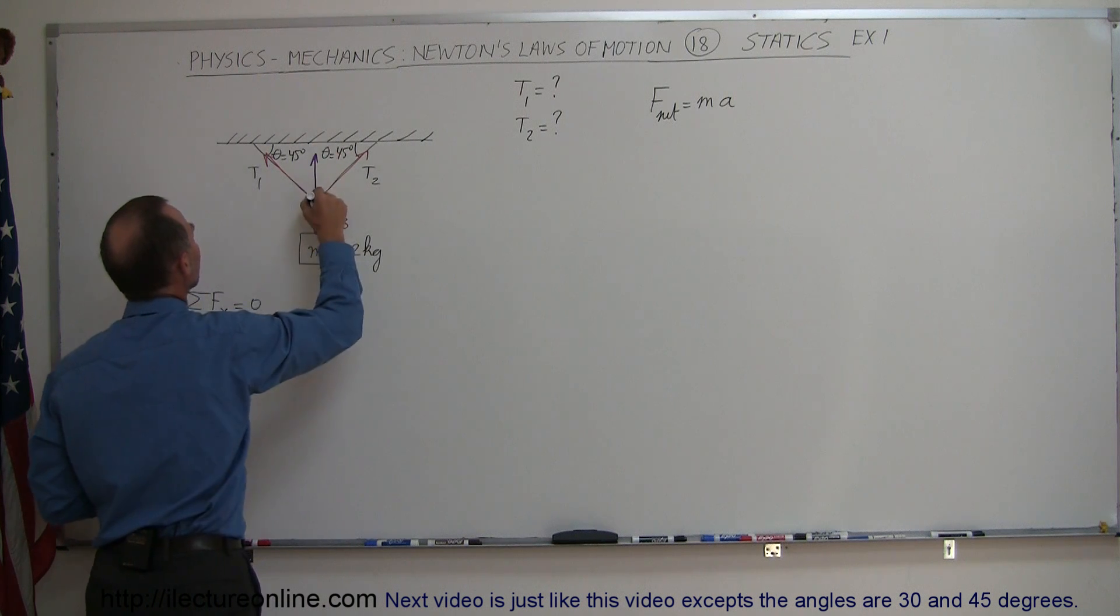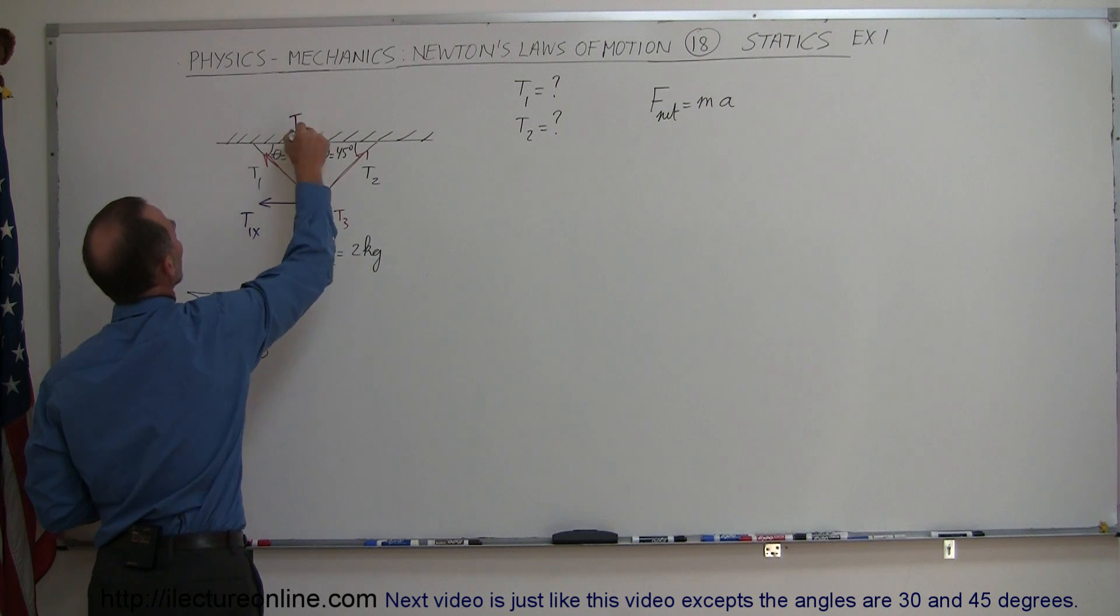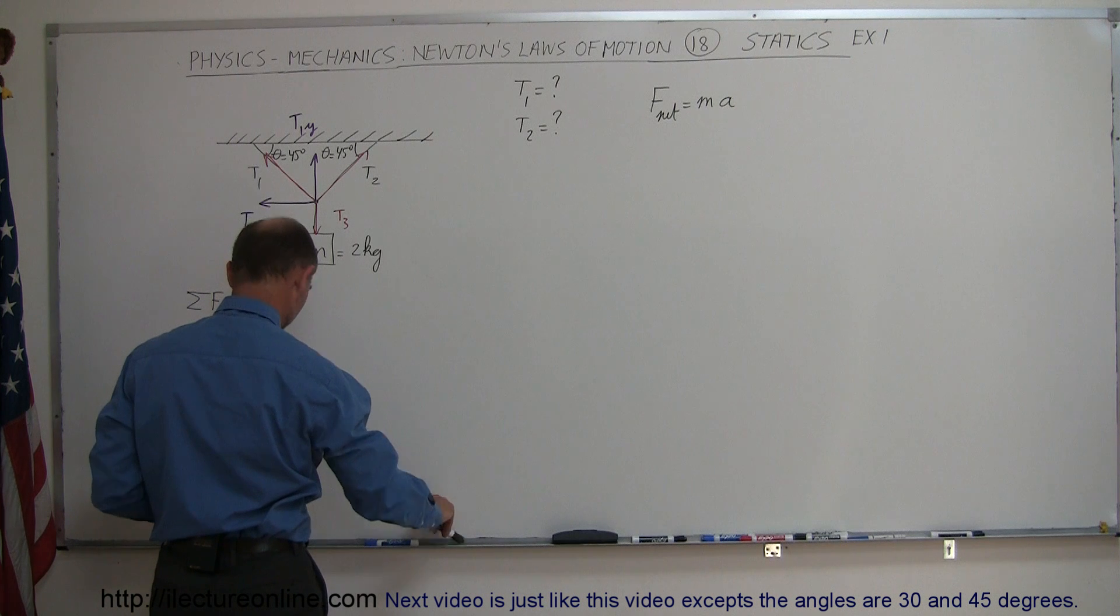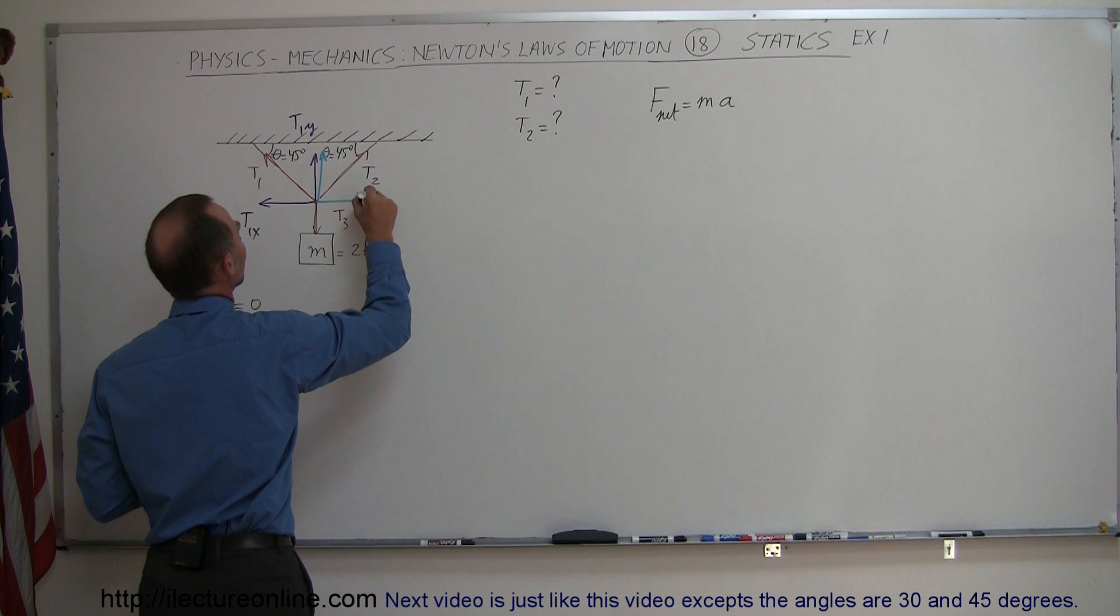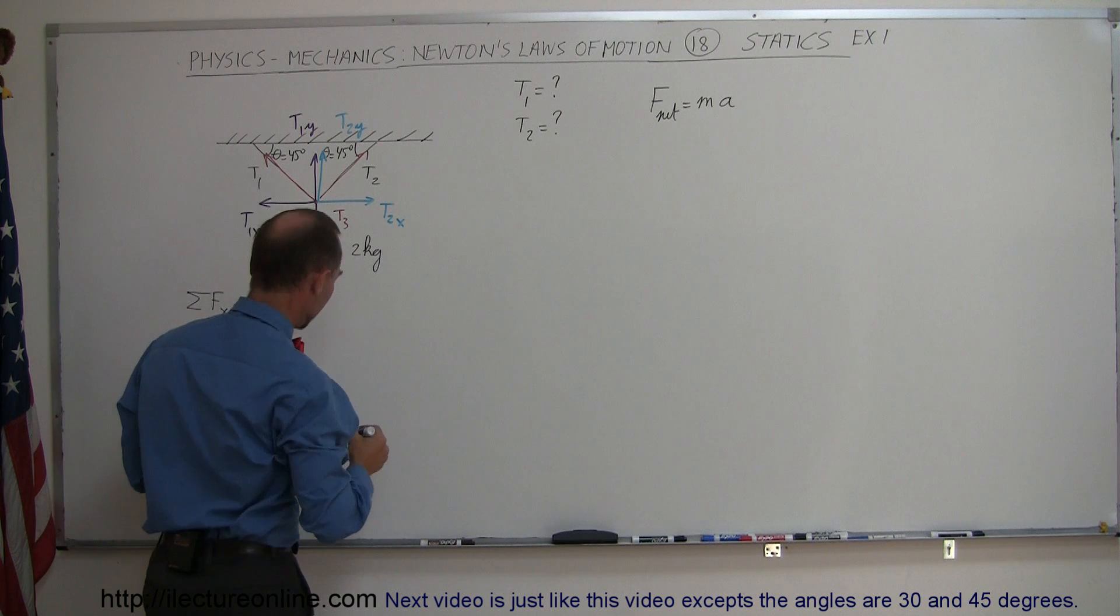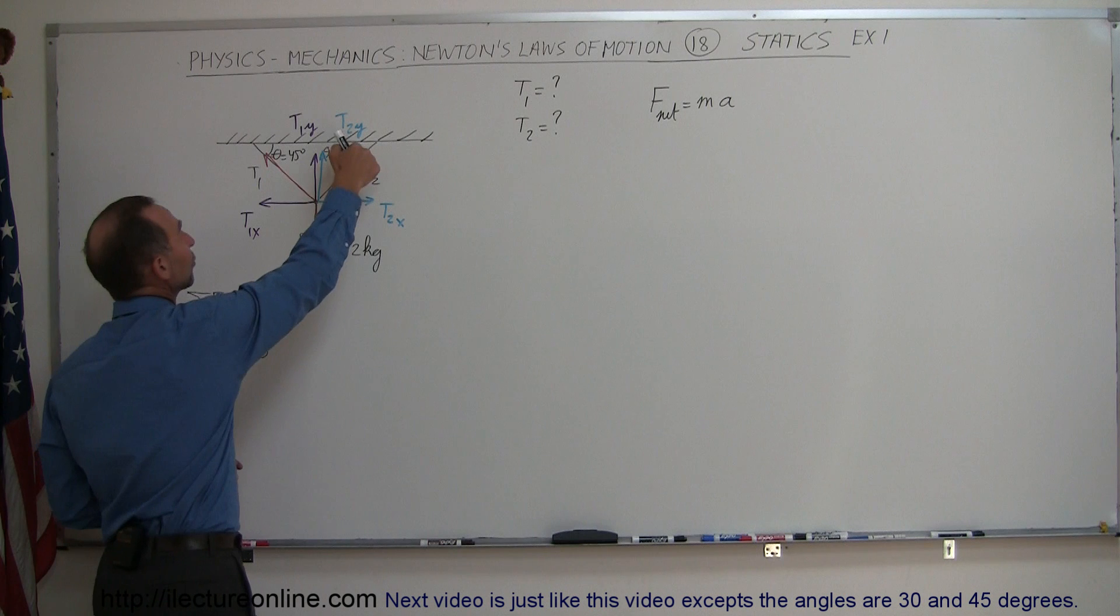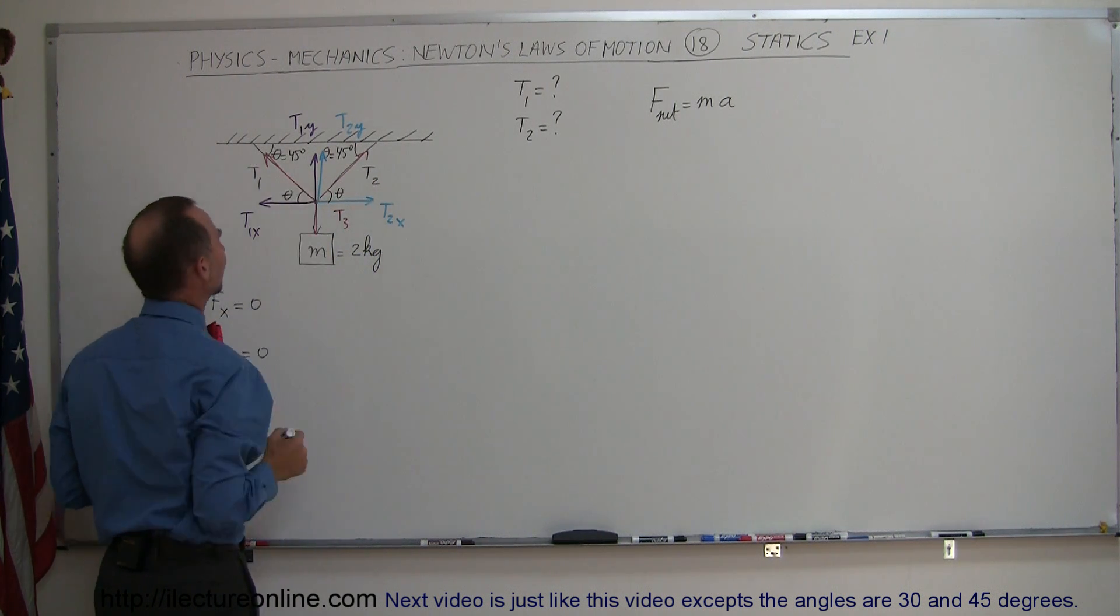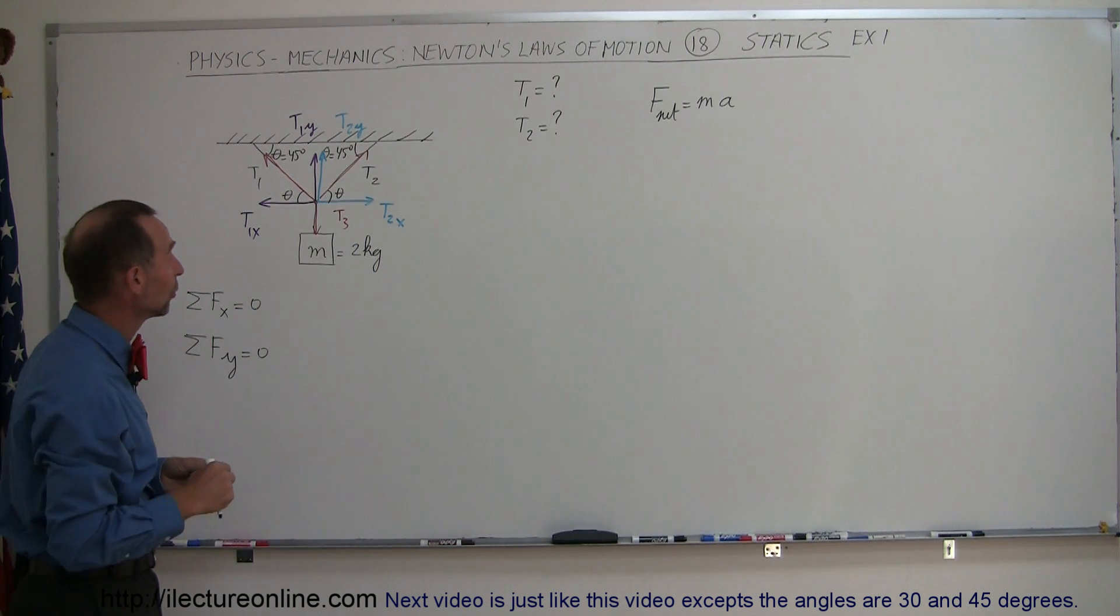So here we can draw the x and y component for tension one. This is tension one x, and this is tension one y. And then using a different color, maybe I'll use blue, I can draw the x and y components of tension two. This is tension two x, and this is tension two y. And of course, I can then find out what those are, and since this angle is 45 degrees, that means that this angle must be 45 degrees as well, and this angle must be 45 degrees. Those are what we call alternate interior angles, and they must be equal.